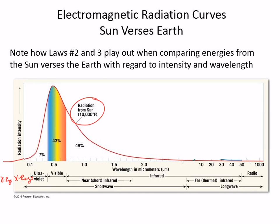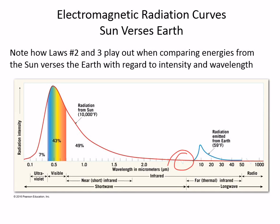The blue curve is the Earth. The Earth's surface temperature is about 59 degrees Fahrenheit — it's weird to think of grabbing the Earth and asking what its temperature is. So it's cooler than the sun, meaning longer wavelengths and a squattier curve. Notice they had to put a break in the graph because the two curves didn't fit very well on the same scale.